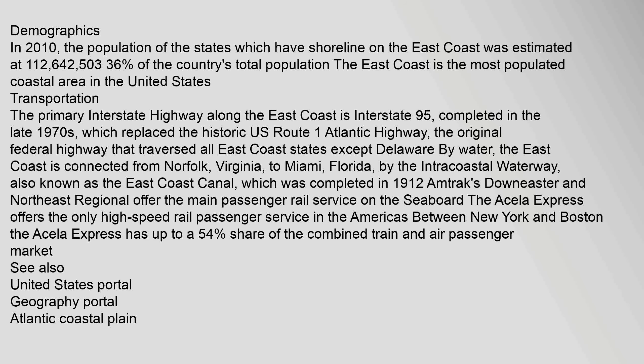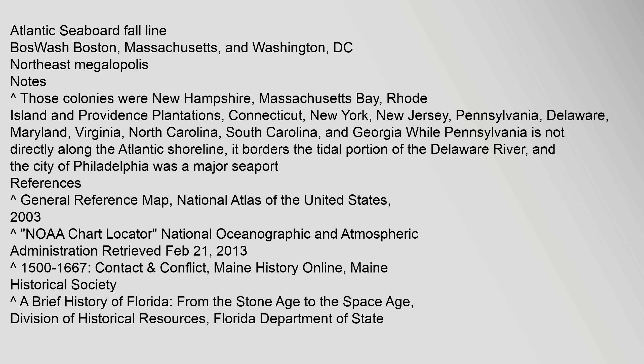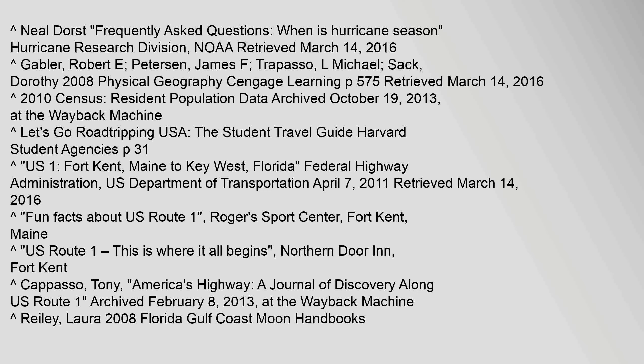See also: United States Portal, Geography Portal, Atlantic Coastal Plain, Atlantic Seaboard Fall Line, Boswash (Boston, Massachusetts and Washington D.C.), Northeast Megalopolis. Notes: Those colonies were New Hampshire, Massachusetts Bay, Rhode Island and Providence Plantations, Connecticut, New York, New Jersey, Pennsylvania, Delaware, Maryland, Virginia, North Carolina, South Carolina, and Georgia. References include the National Atlas of the United States (2003), NOAA Chart Locator (retrieved February 21, 2013), and NOAA Hurricane Research Division FAQ (retrieved March 14, 2016).